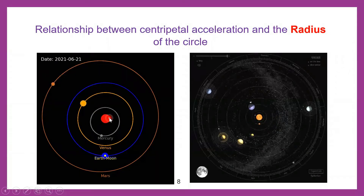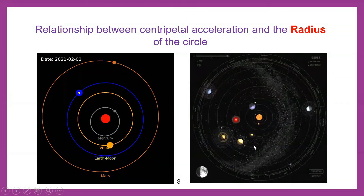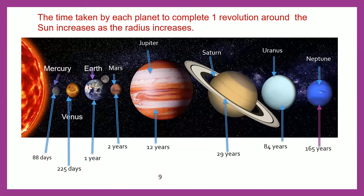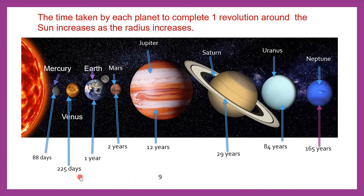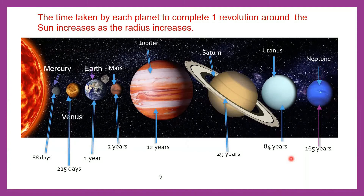In this animation, we can see that the closer planets are moving faster, and those that are far away move slowly. The time taken to complete one revolution by a planet around the sun is called one year, also known as the time period. Mercury takes 88 days, Venus 225 days, Earth 365.25 days, Mars two years, Jupiter 12 years, Saturn 29 years, Uranus 84 years, and Neptune 165 years to complete one revolution around the sun. This confirms that acceleration is inversely proportional to the distance from the sun.